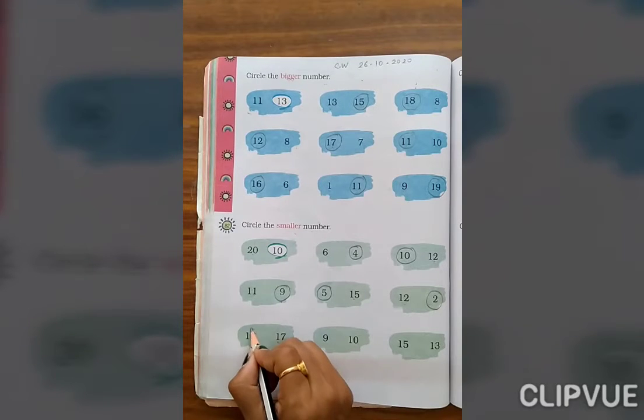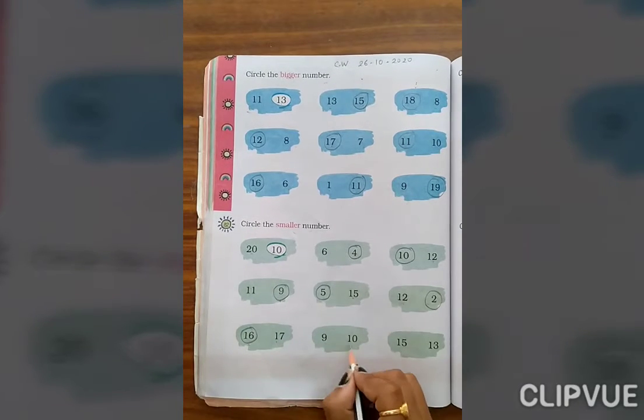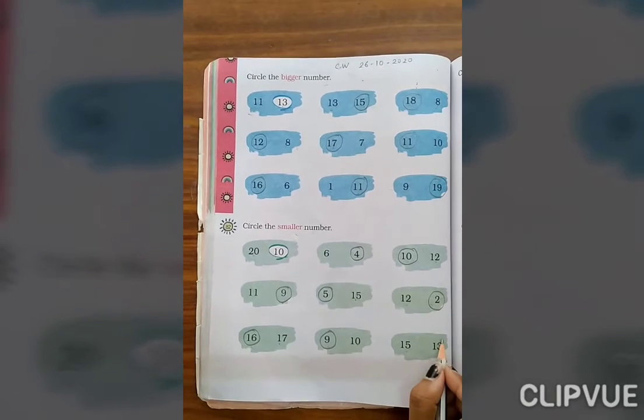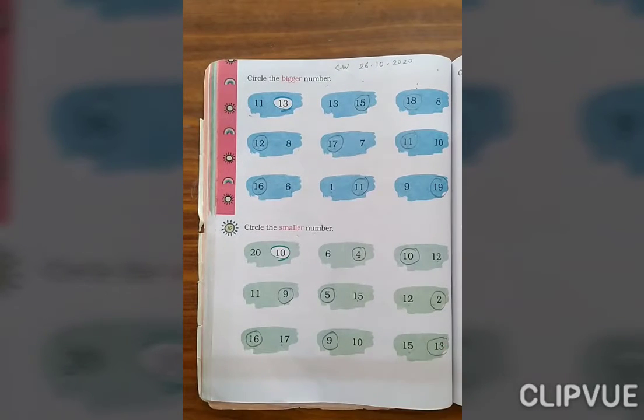जो पहले आता है, कौन सा है? 16. 9, 10. Then 9 is small. 15, 13. 13 is small. Understand.